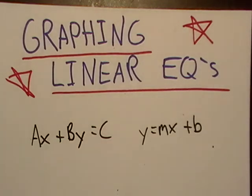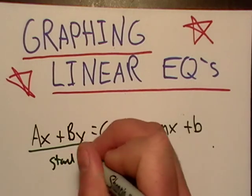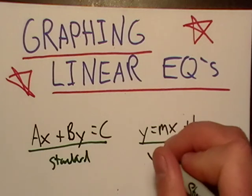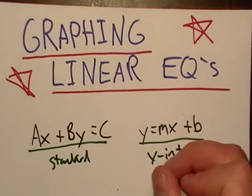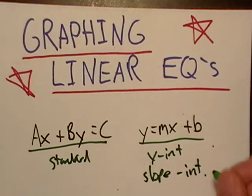There's two pretty common ways of representing these lines on a coordinate plane. You've got the standard form right here, is what they call that, and then over here you got the y-intercept or the slope-intercept form, and they both pretty much mean the same thing.